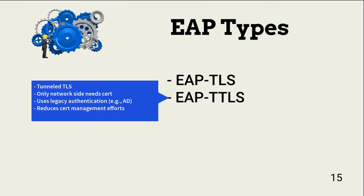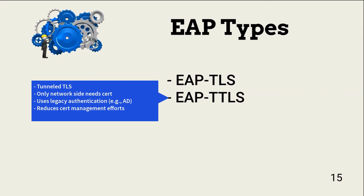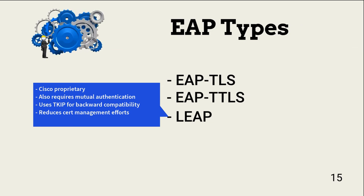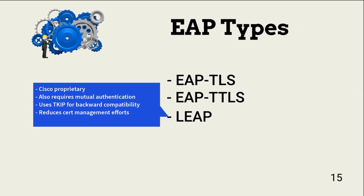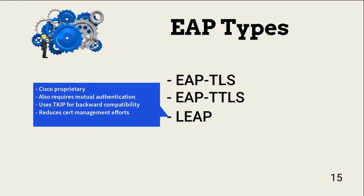EAP-TTLS, or EAP Tunneled TLS, also uses mutual certificate authentication, but only the network side needs a certificate. This is done by requiring the authenticator to use legacy authentication databases like Active Directory. By using legacy information and a centralized database, the effort needed to manage client certificates is reduced. LEAP, Lightweight Extensible Authentication Protocol, is a Cisco proprietary alternative to WPA using TKIP. LEAP requires mutual authentication between the client and the network. The LEAP server sends the client a random challenge, and the client returns a hashed password. Once the password is authenticated, the client asks the network for a password, and then the client and network execute a key exchange.